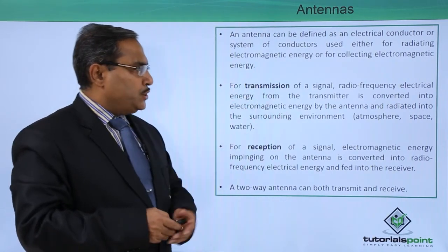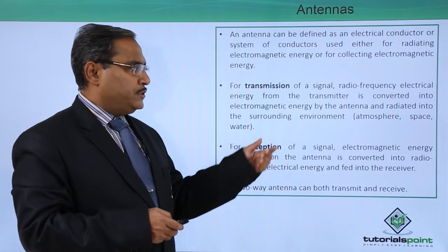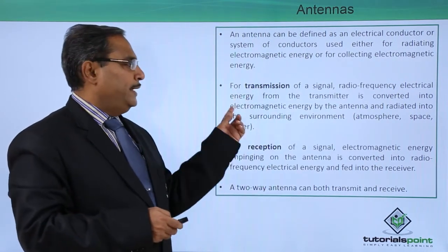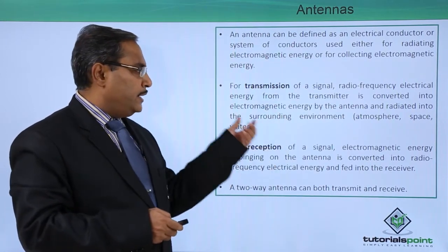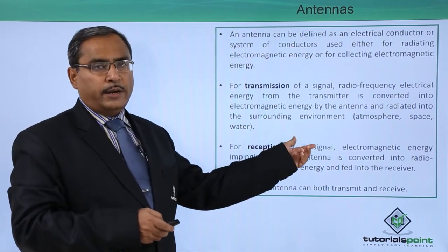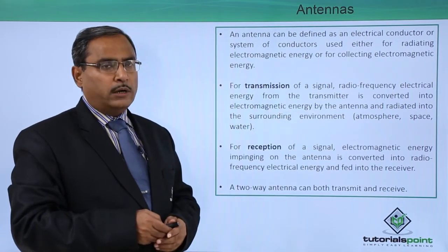For transmission of a signal, radio frequency electrical energy from the transmitter is converted into electromagnetic energy by the antenna and radiated into the surrounding environment. The surrounding environment may be atmosphere, space, or water.